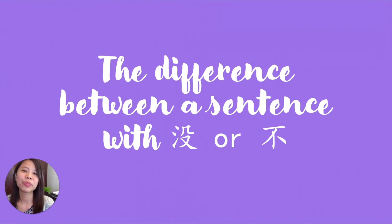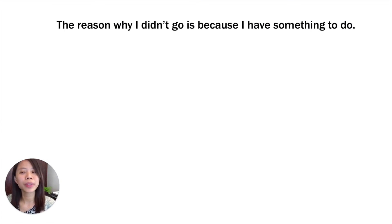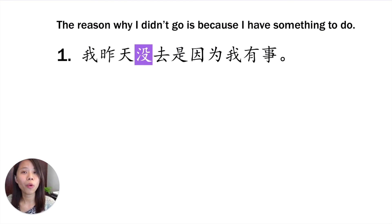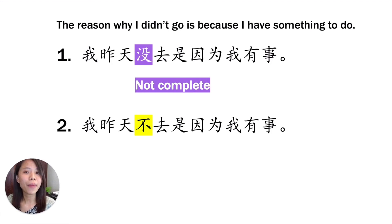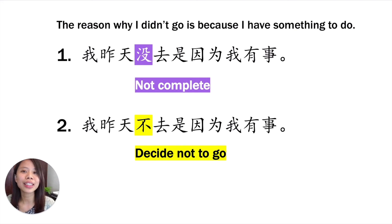Let's check the differences between a sentence with 没 or 不. For example, you want to explain why you didn't go to your friend's place yesterday. You can say 我昨天没去，是因为我有事。 Or: 我昨天不去，是因为我有事。 What's the difference? 没 means something is not complete. But 不 means you decided not to go — it relies on your intentions.